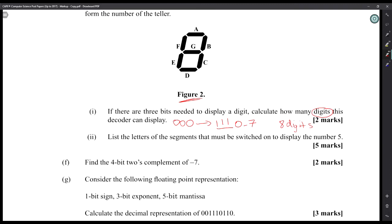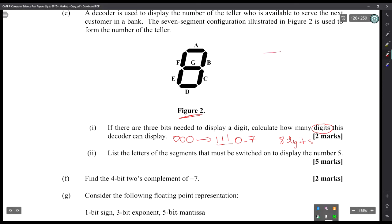Part two: list the three letters of the segments that must be switched to display the number five. You literally just have to look at the letters that will give you a five. So to get a five you would have A, F, G, C, D. Clearly that would give me the number five.